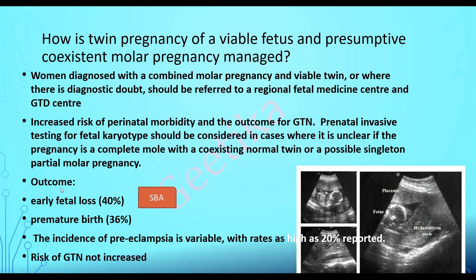What is the outcome for the normal baby in a twin pregnancy with one normal and one molar pregnancy? There will be early fetal loss in 40% of cases, premature birth in 36%, and the incidence of pre-eclampsia is as high as 20%. Importantly, the risk of GTN is not increased with twins where one is viable and one is molar. These percentages are very important for exams. If given a scenario of twin pregnancy with one viable fetus and a suspected coexisting mole, the next step is to refer to fetal medicine center and GTD center for prenatal invasive fetal karyotyping.